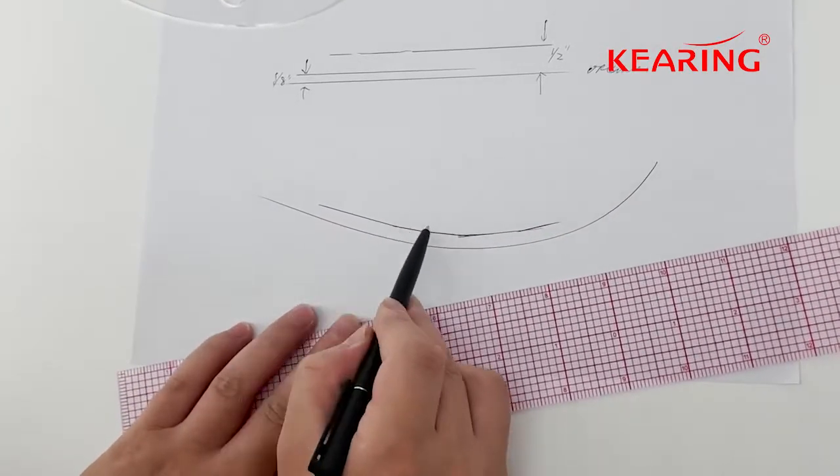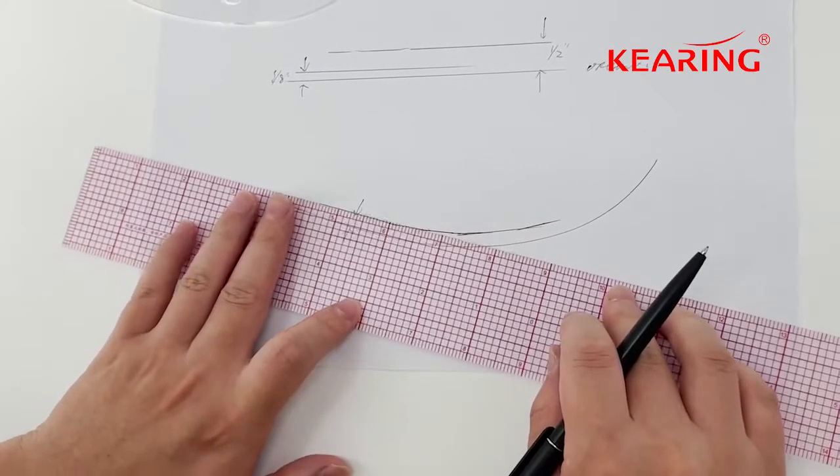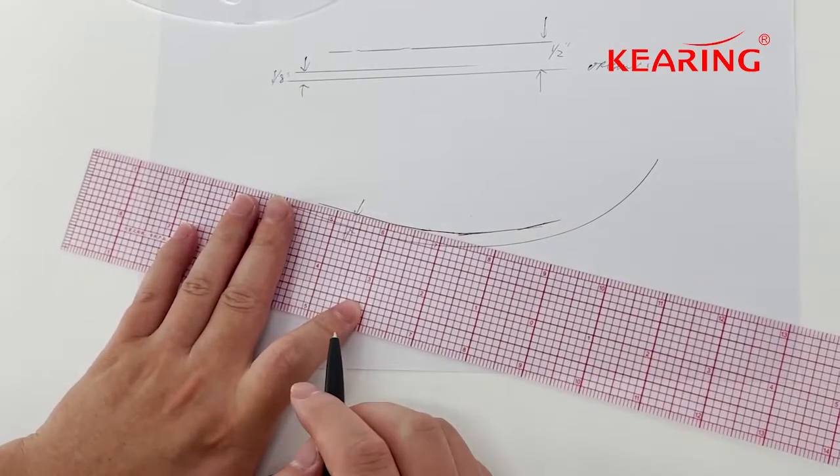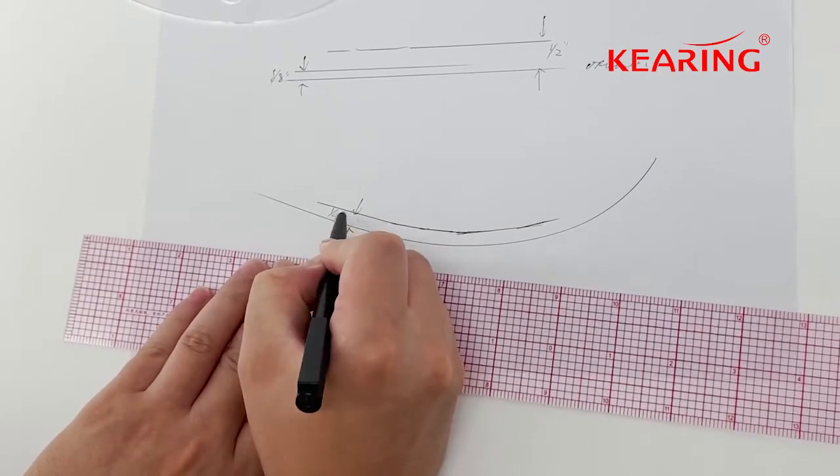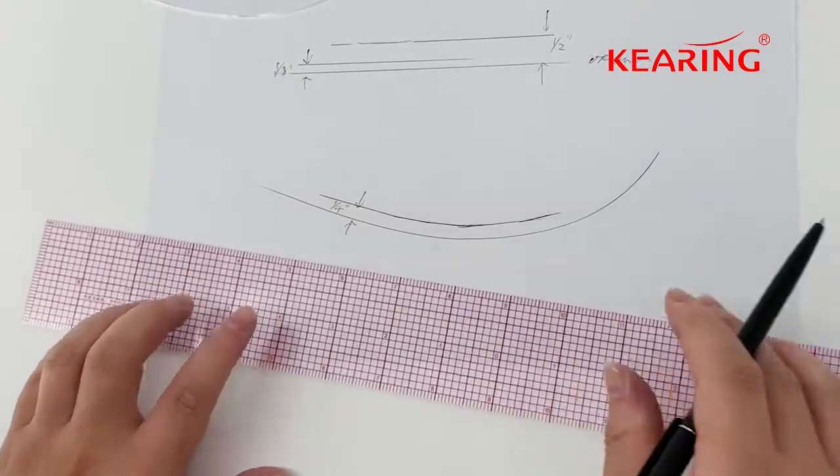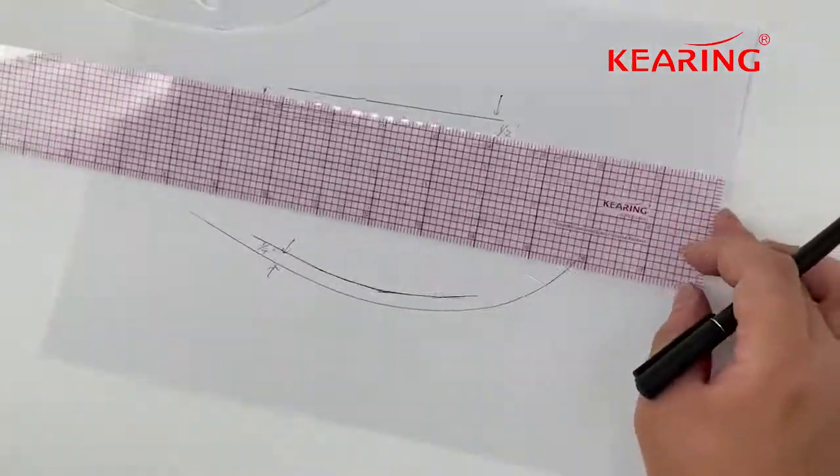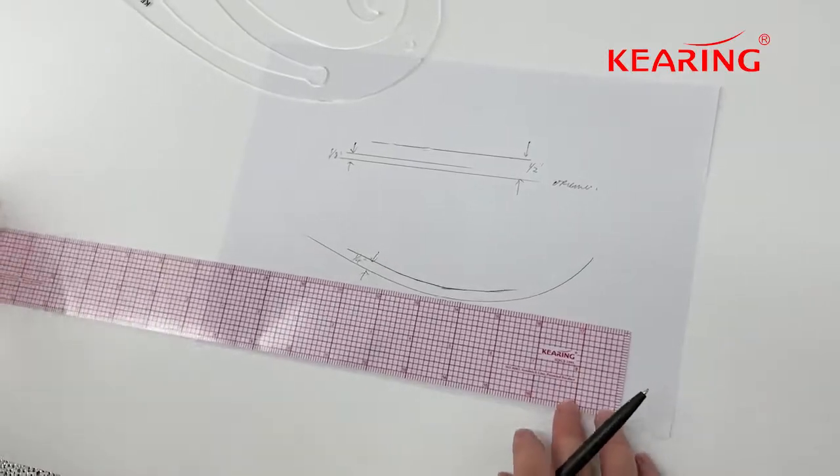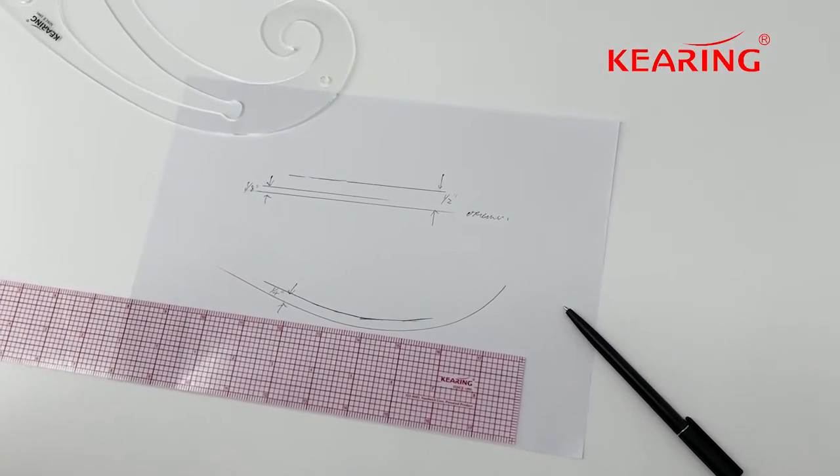We can join a line here, and this is quarter inches. This is a basic usage to use this pattern grading ruler. Hope it is helpful for you. Thank you very much.